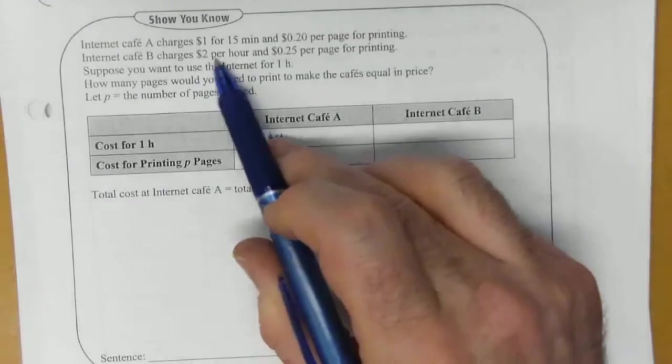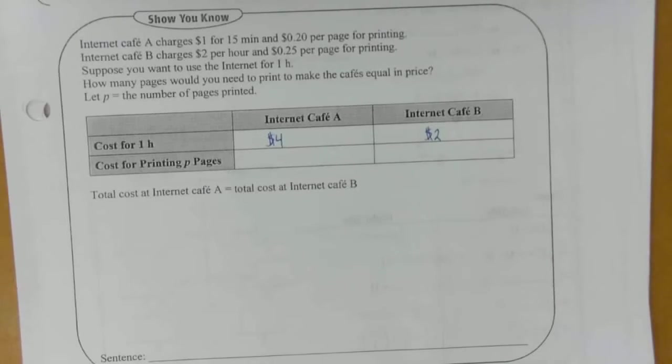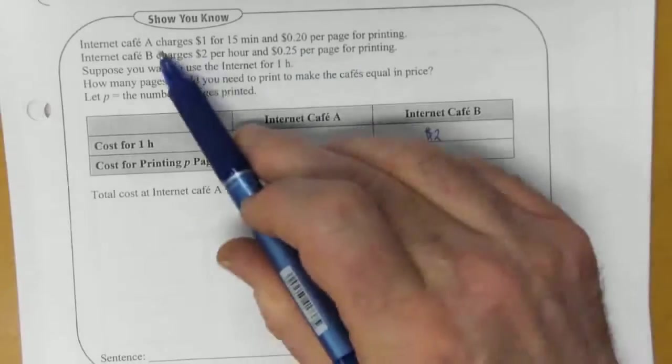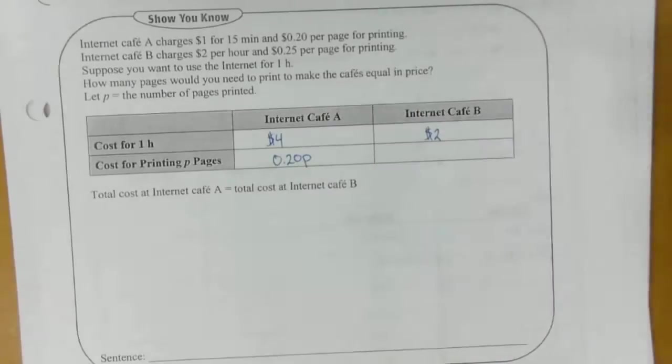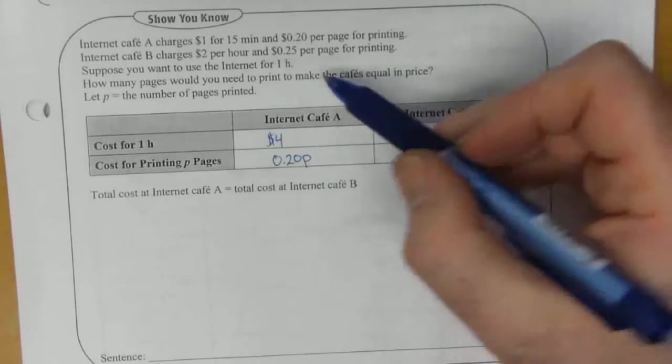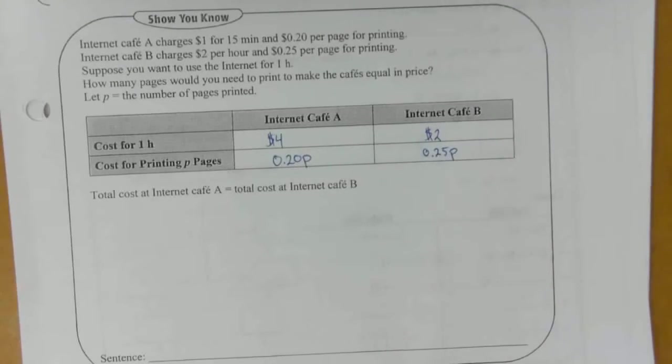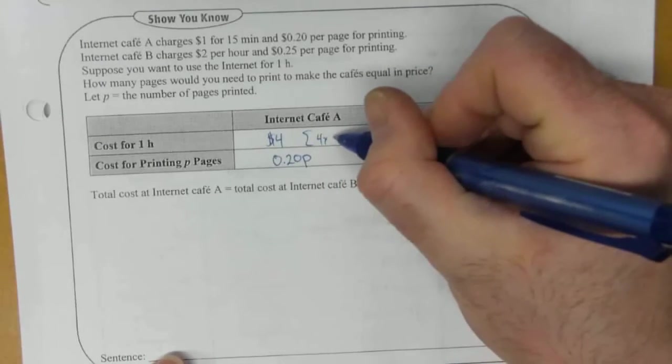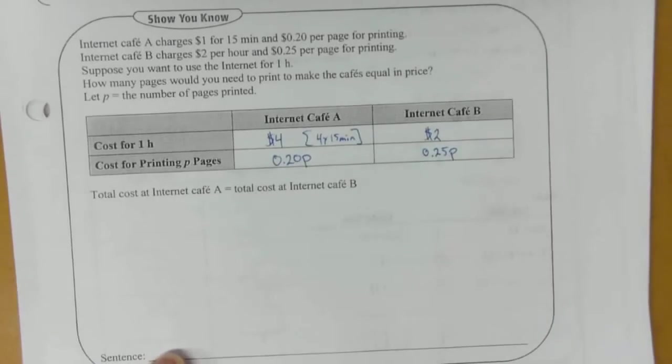For B it's two dollars per hour so it's going to be two dollars. Now for printing pages, A is 20 cents per page so it's 0.20 times P and for B it was 0.25 times P. So there's the information summarized. I'm just going to put in brackets here it's four times 15 minutes just as a note.